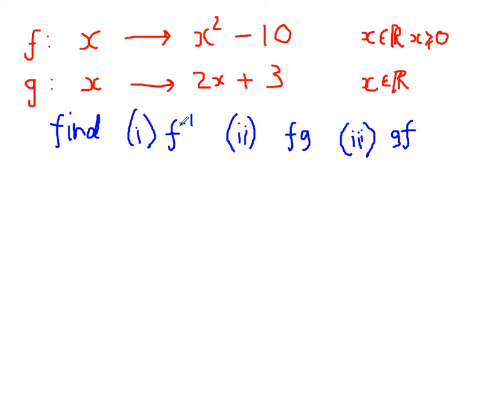So the first thing we're going to do is we're going to find the inverse function of f. Now, as explained in the text, the technique for doing this is to write it as x equals y squared minus 10. So, basically from the definition, instead of f of x, write x, and instead of x on the other side, write y. And now we make y the subject.